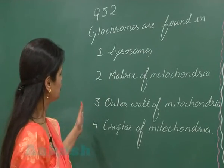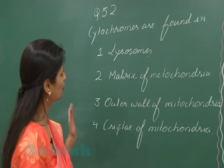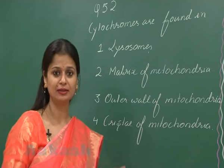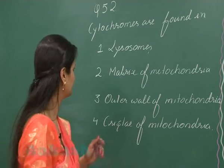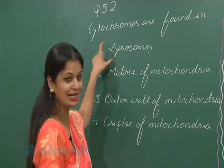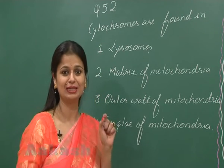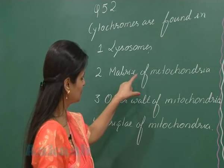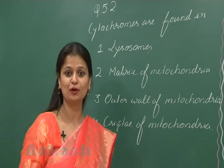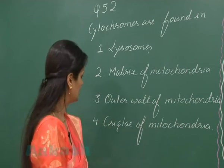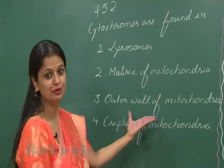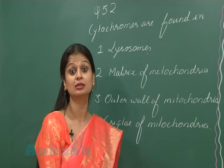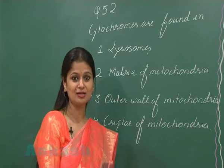Question number 52: cytochromes are found in — cytochromes are iron-containing proteins; copper can also be present. The first option, lysosomes, contain hydrolytic enzymes. The matrix of mitochondria has enzymes for the Krebs cycle.